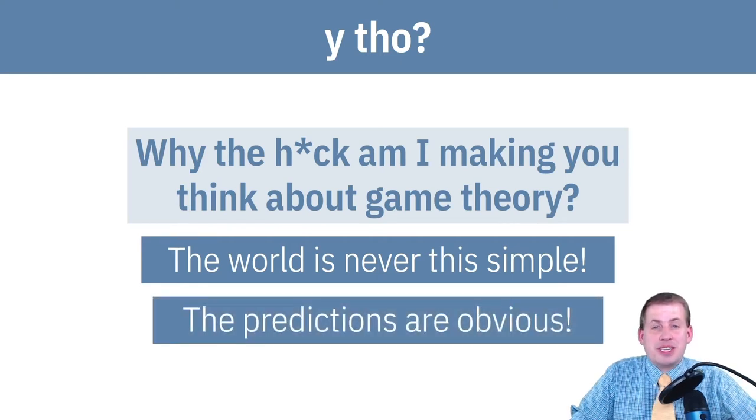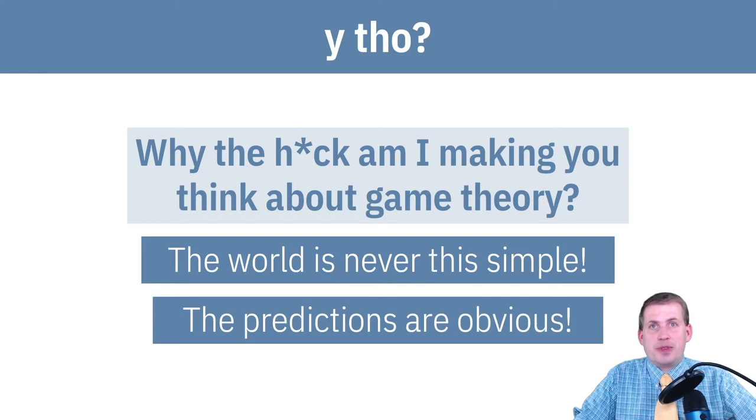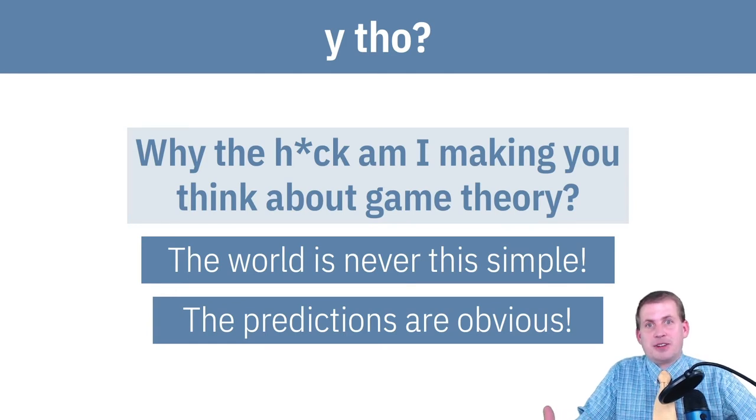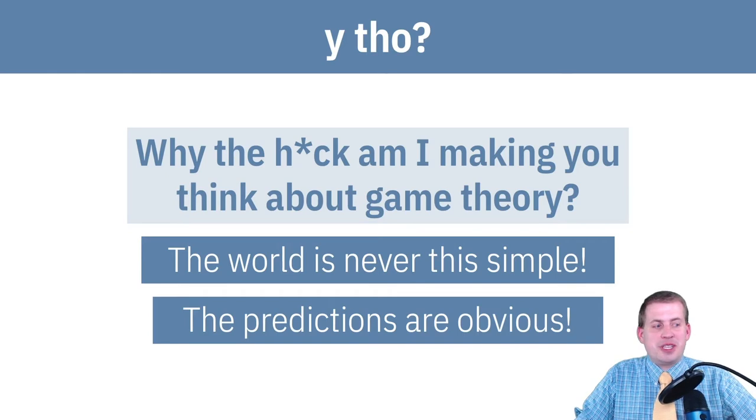Also, the predictions that you get out of these models are often super obvious. In the restaurant example, where we looked at the Chinese restaurant and the Italian restaurant, the outcomes are that these two friends will either go to a Chinese restaurant together or an Italian restaurant together. That seems like a super obvious outcome, like they're going to go to the restaurant together. So why are we even doing this?